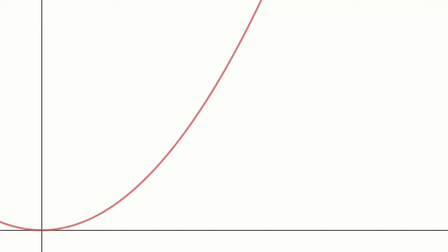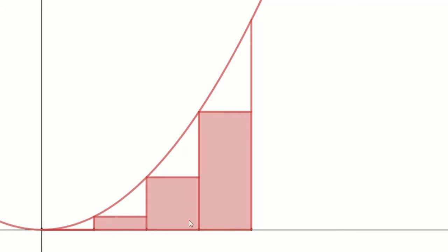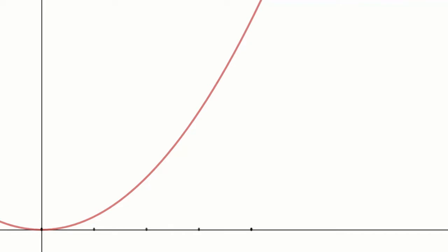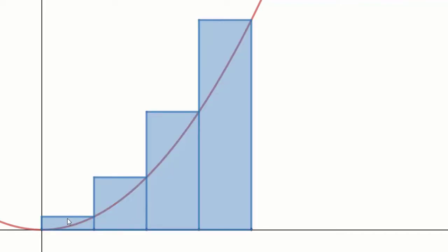Here's the graph of x-squared on the board. The interval from zero to one is shown with tick marks. The left Riemann sum creates sub-rectangles, and the accumulated area of those rectangles is a little under the actual area we need — due to white spaces above the rectangles but below the curve. Now let me hide the left Riemann sum picture and put on the right Riemann sum.